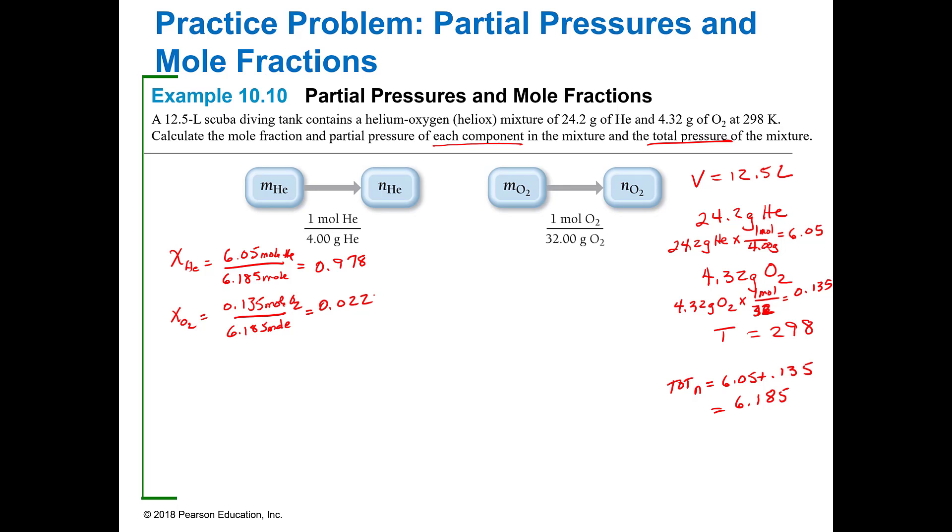Those two added together would equal one. If I want to know what the total pressure is, I rearranged that so that I have n R T over V. I'm going to plug those numbers in, so this is going to be the total moles which is 6.185 times R, which is 0.0821 liter atmosphere over mole K, and then our temperature which is 298, and then that's going to be divided by the volume which is 12.5 liters. That's going to give me a total pressure of 12.1 atmospheres.